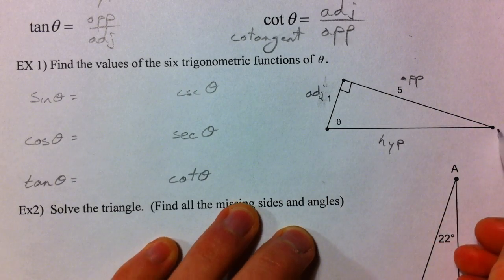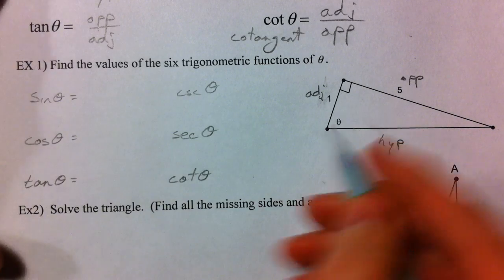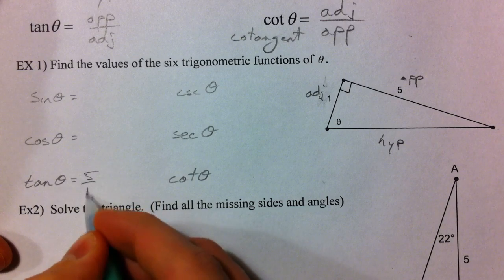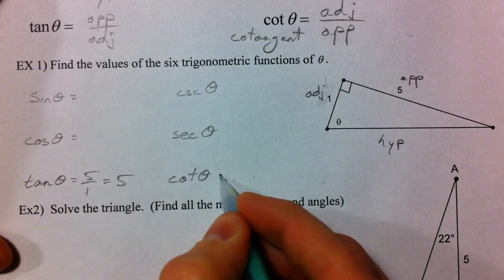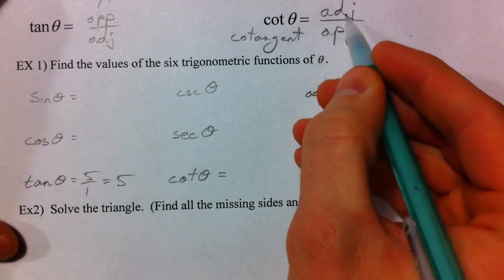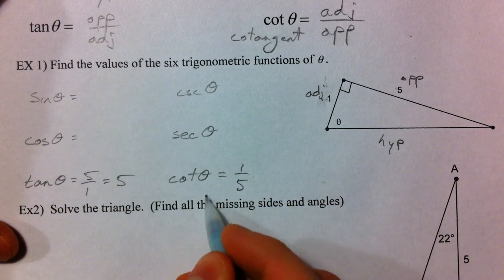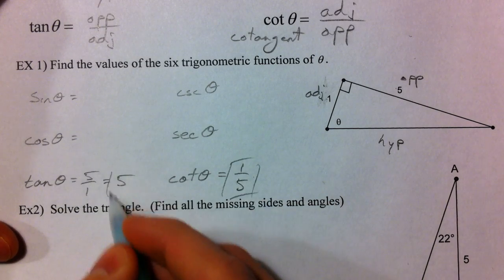We're going to need to find the hypotenuse, because right now, we only know opposite over adjacent is five over one. Or five. Which would mean the cotangent, the adjacent over the opposite, is one over five. And so, we have this so far.